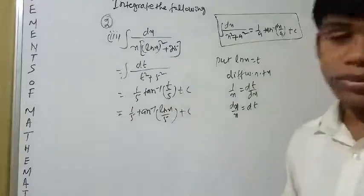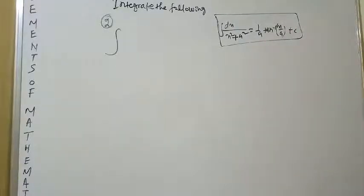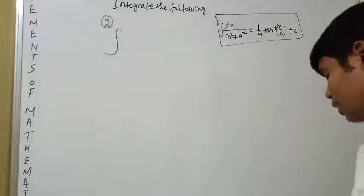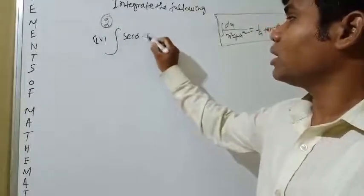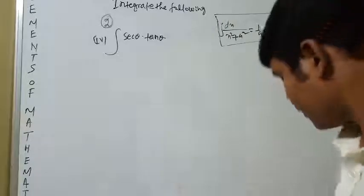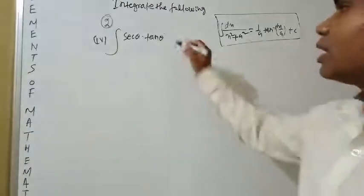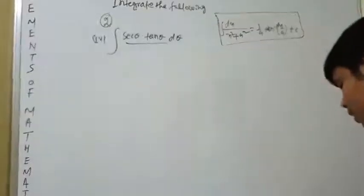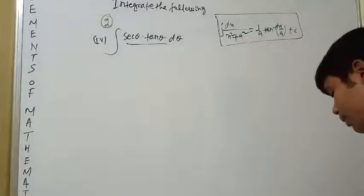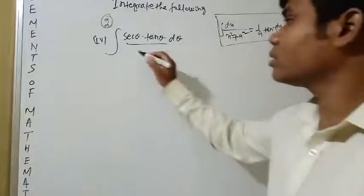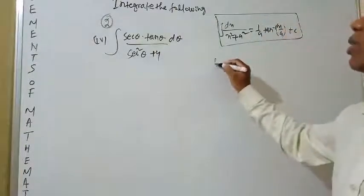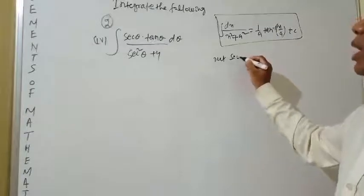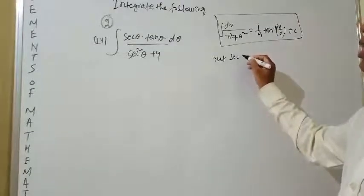The next question, Question Number 4, is: integration of sec θ × tan θ dθ divided by sec²θ + 4. Now put sec θ = t. Differentiating with respect to θ.